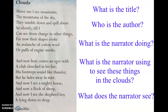Let's read it one more time — you can read it with me. Clouds. Above me I see mountains, the mountains of the sky. They tumble down and spill about so silently, till I can see them change to other things. For now their shapes evoke an avalanche of cotton wool, or puffs of engine smoke. And now here comes an ogre with a club clenched in his fist. His footsteps sound like thunder, but he fades away in mist. And now I see a mighty horse, and now a flock of sheep. And now I see the shepherd boy lying down to sleep.